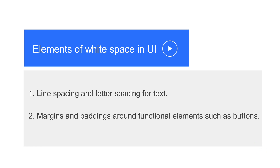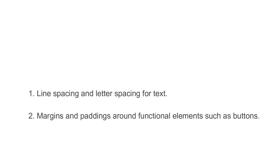What are the two elements of white space in UI design? The first is line spacing and letter spacing in the text, and the second is margins and paddings around UI elements such as buttons.